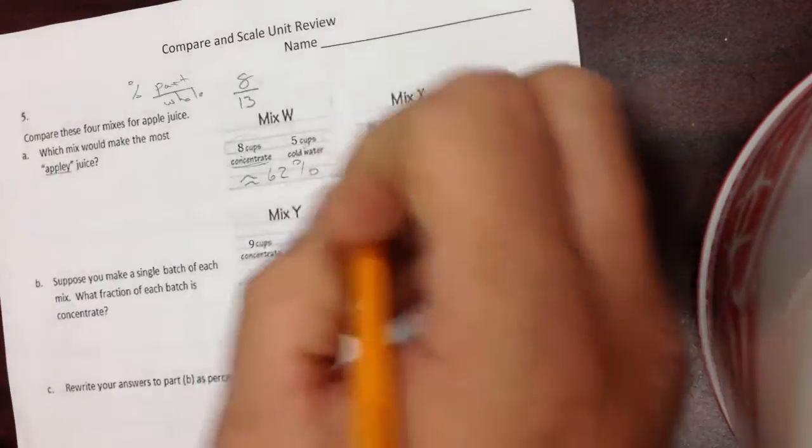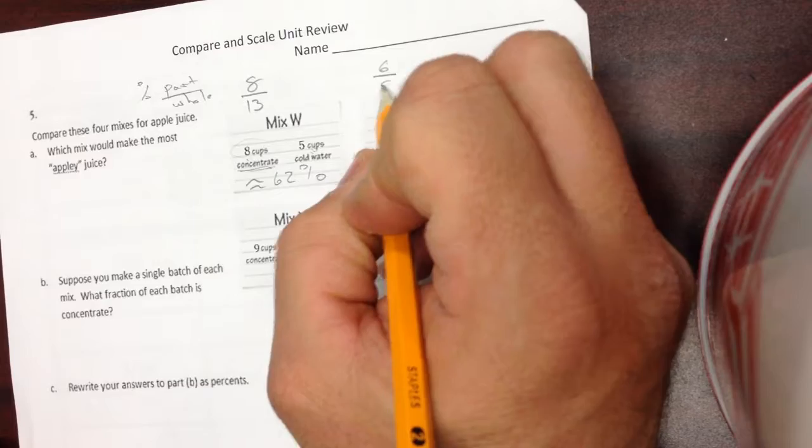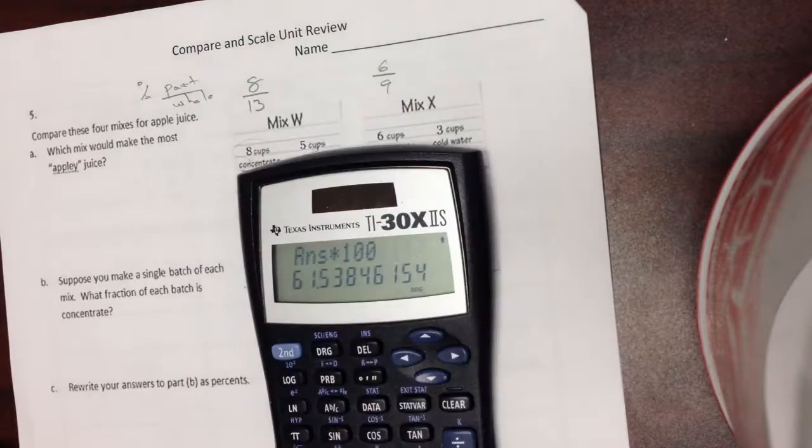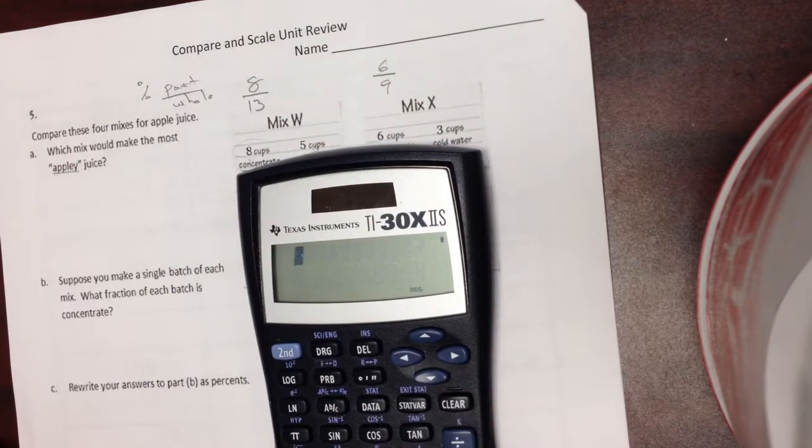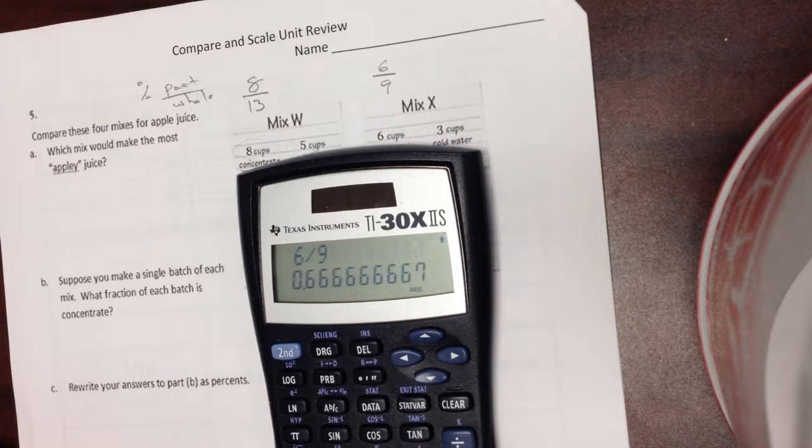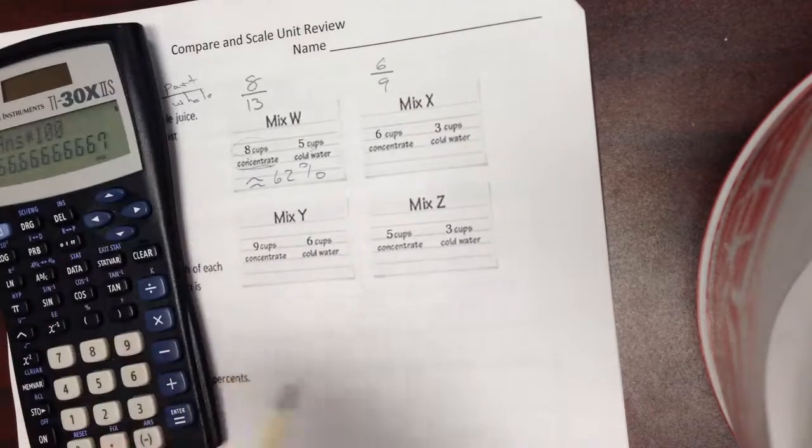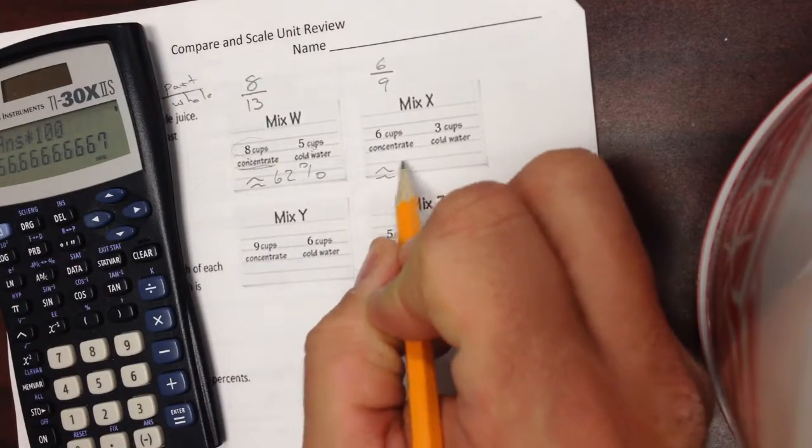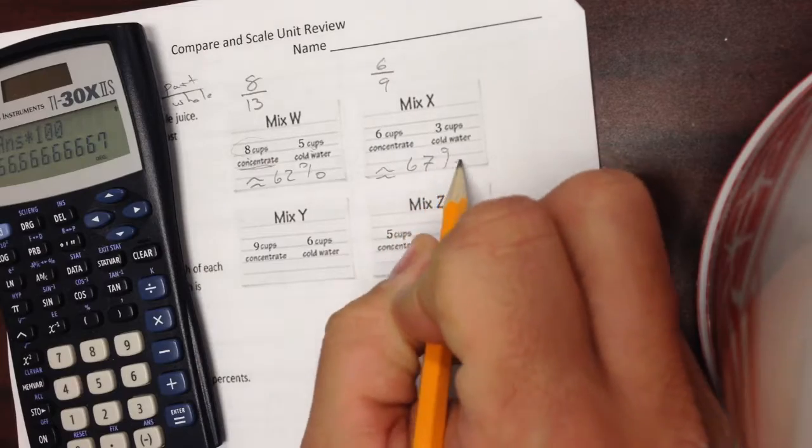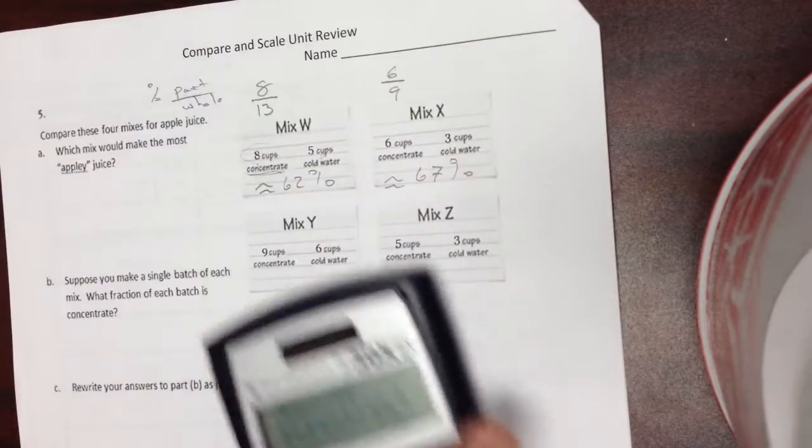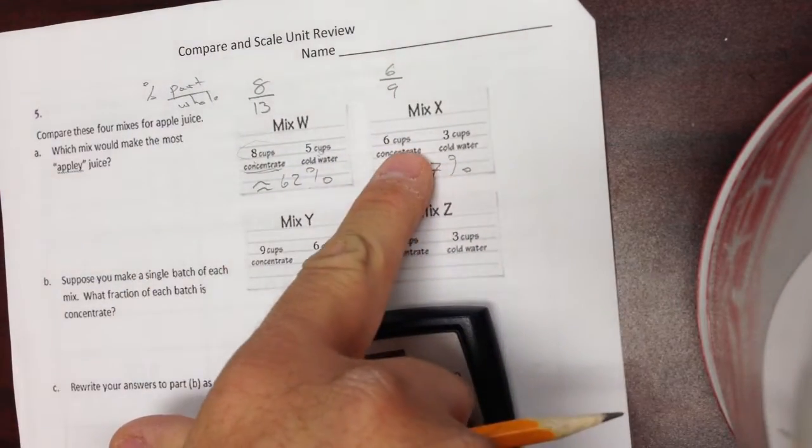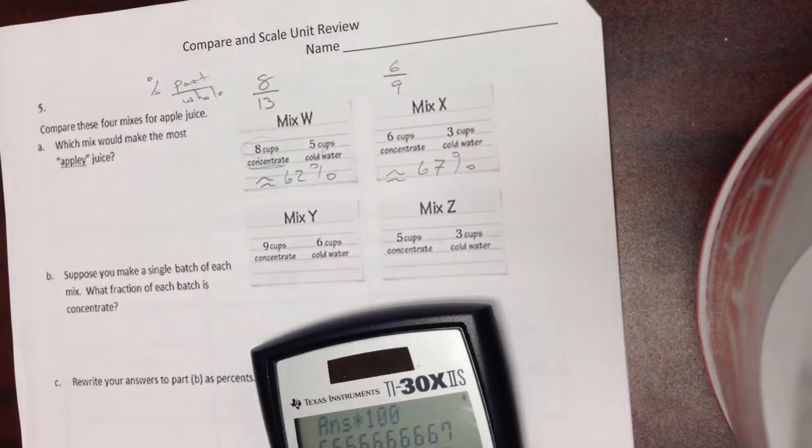Do the next one. 6 out of 9. 6 divided by 9, 0.6 repeating, times 100, if you can't move that decimal point, 66 point. So if I round that off to the nearest percentage, it's approximately 67%. It's clearly much higher here, even though there's a lot less concentrate, but it works out to a higher percentage.